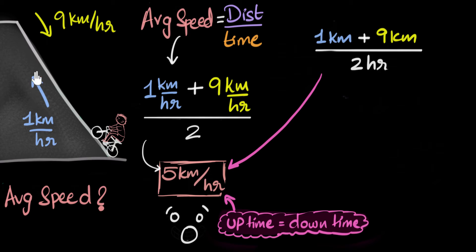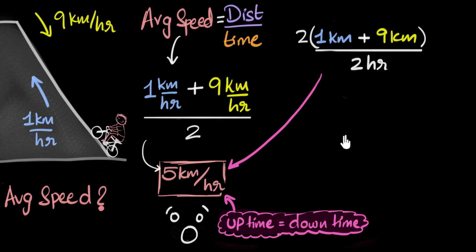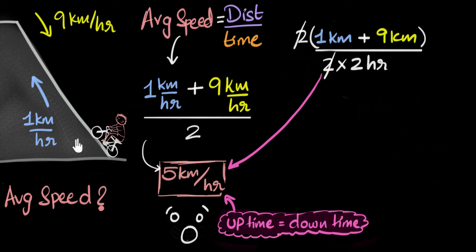It doesn't have to be one hour each — that was just an example. Even if it took him two hours to go up and two hours to come back down, the answer would be the same. If he goes up for two hours he travels twice the distance, and coming back down for two hours he also travels twice the distance. The total distance doubles and the total time also doubles — four hours total — and when you do the average, it cancels out to the same answer. So as long as his uptime equals his downtime, this method works and the answer will be exactly five, right in between one and nine.